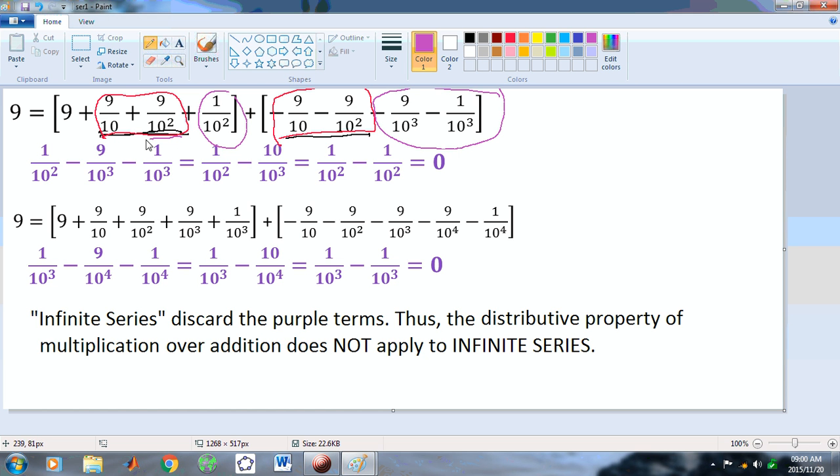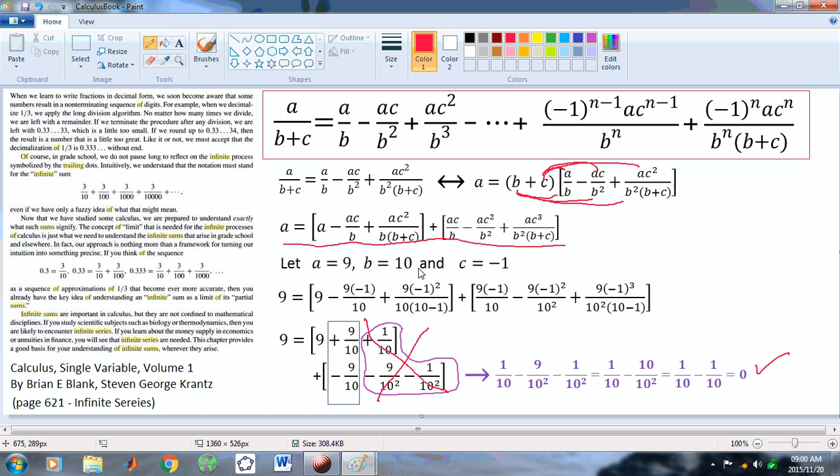But this, this here is called, the red part here is called an infinite series. The red parts. And so, again, once again, if you add up the purple parts, you'll see that it'll give you 0. Similarly, if you add one more term into, one more term from this red box here.